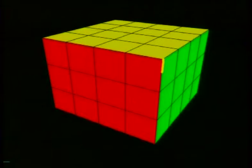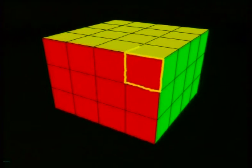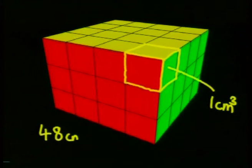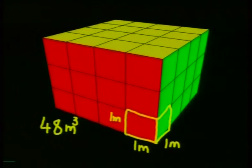But what is a unit? It's the length of an edge of a cube. So if each of these cubes were 1 centimeter, then the volume of this structure would be 48 cubic centimeters. If the length of each edge had been 1 millimeter, the volume would be given in cubic millimeters. Or if the cube measured 1 meter by 1 meter by 1 meter, it would give us a volume in cubic meters.